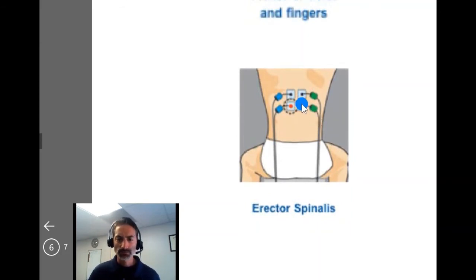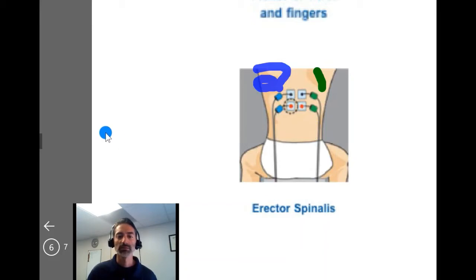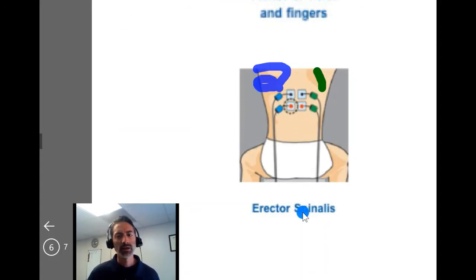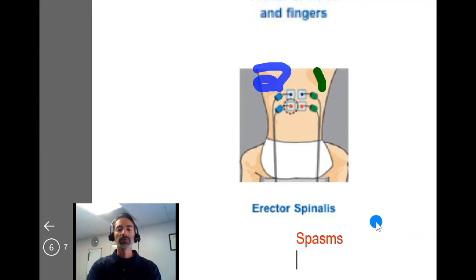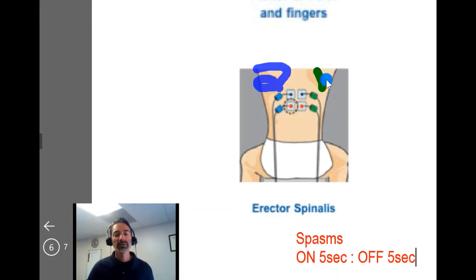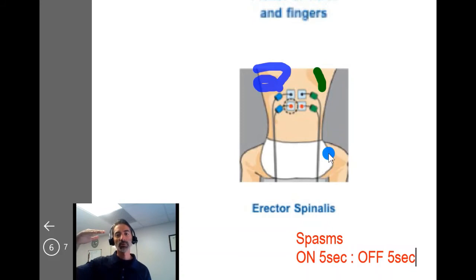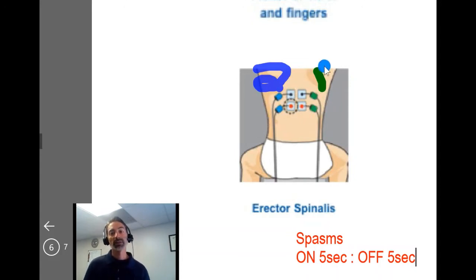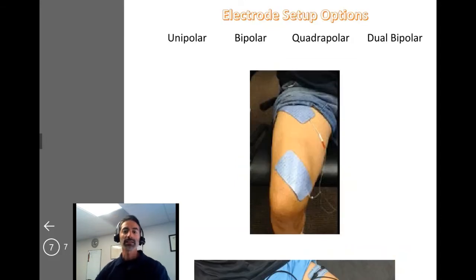For another example, you have channel one here and channel two there — that is also a dual bipolar setup. You might set this up when someone has paraspinal spasms, using an on-time of five seconds and an off-time of five seconds to fatigue those muscles. They may be hypertonic or facilitated and you want to inhibit them and down-regulate their spasm and spasticity. You'd set up channel one and channel two independently. That's an example of dual bipolar using Russian stimulation.